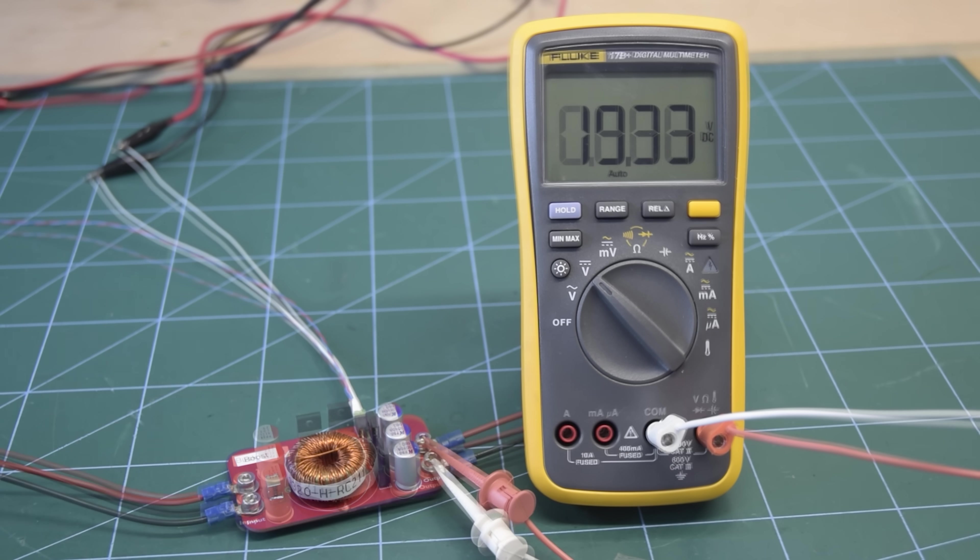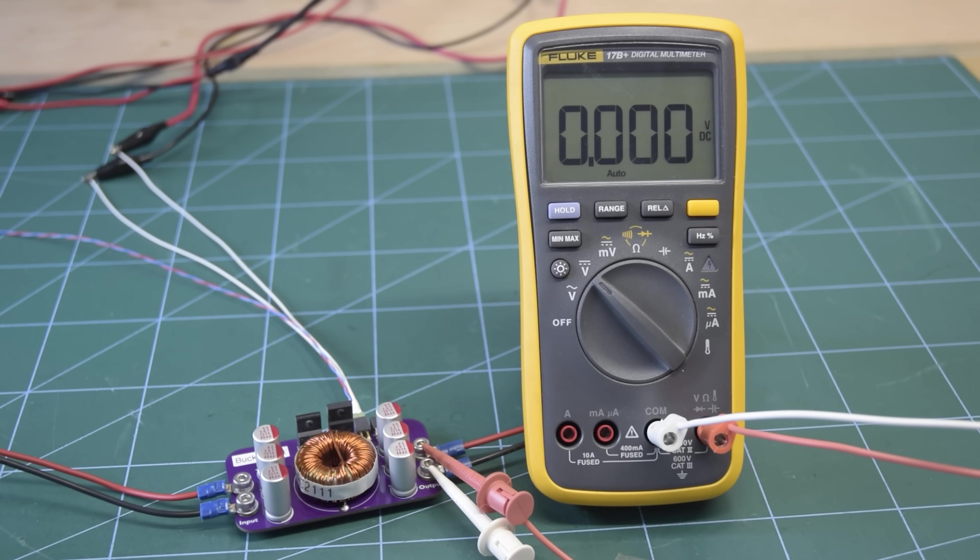And now finally, let's take a look at the buck boost. So let's turn on the input to this and see how it goes. Wow, we've got pretty much minus 10 volts. Again, exactly what we expect. Our output voltage is inverted relative to the input.